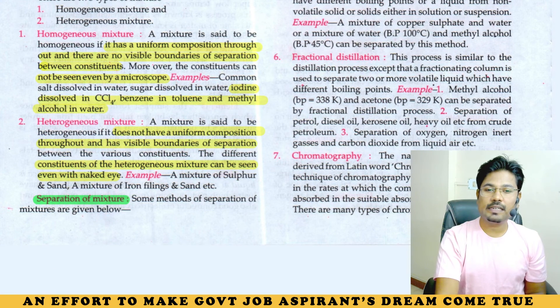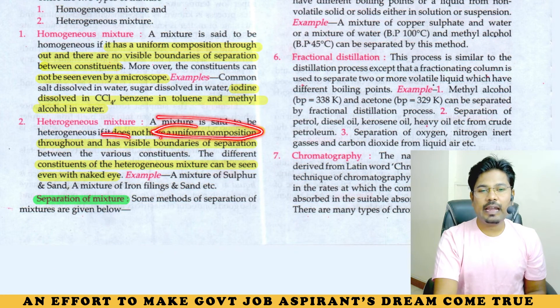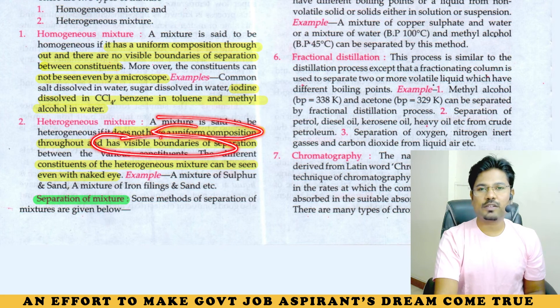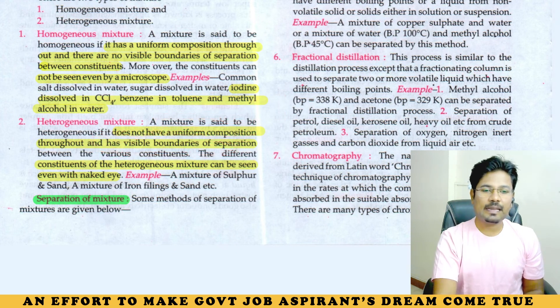Heterogeneous mixture does not have uniform composition and has visible boundaries of separation between constituents. The mixture can be seen with the naked eye. Example: mixture of sulfur and sand.